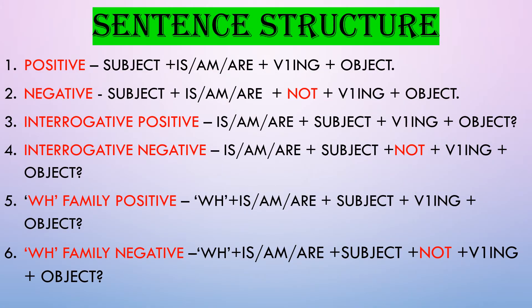This is the most important slide of this video, as it includes the sentence structure in present continuous tense. In a positive sentence: subject + is/am/are + first form of verb with -ing (present participle) + object. In a negative sentence: subject + is/am/are + not + first form of verb with -ing + object.